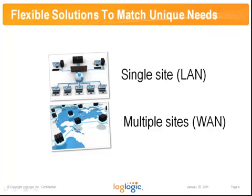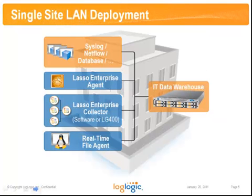In order to explain this portfolio, we're going to look at two different deployment scenarios: a single-site LAN environment, and a multiple-site organization. Firstly, let's look at the top line marked Syslog, NetFlow, Database. There are literally dozens and dozens of IT data sources that our IT data warehouse can collect from directly. And, of course, because all this is LAN-based traffic, we're not worried about data encryption or bandwidth. We can just stream the IT data directly into the warehouse.